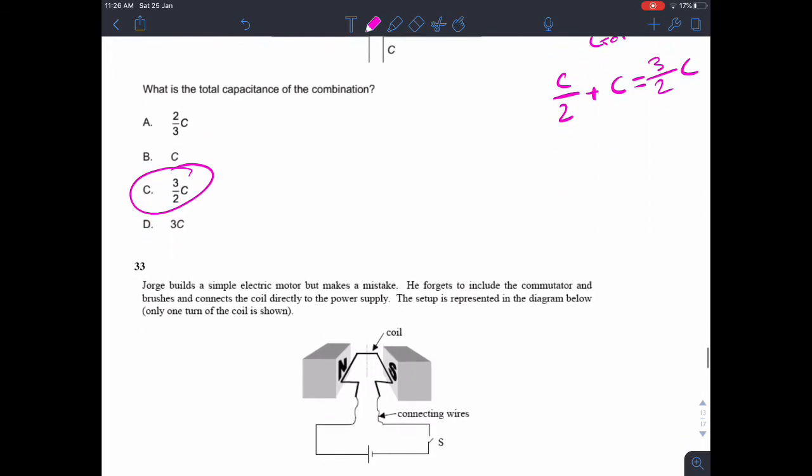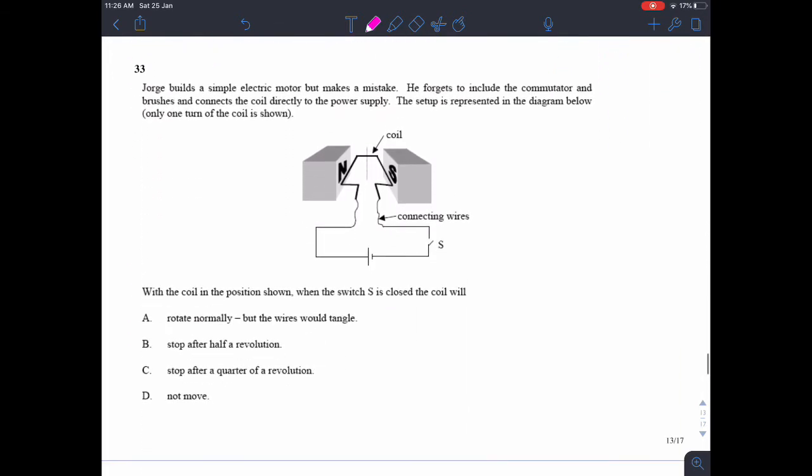Question 33. Here's a simple motor, but there's no commutator or anything. So what's going to happen to the coil once it starts spinning? Well, once it starts spinning, if we've got the positive side here and the negative side here, we can use Fleming's left hand rule to determine the nature of the force.